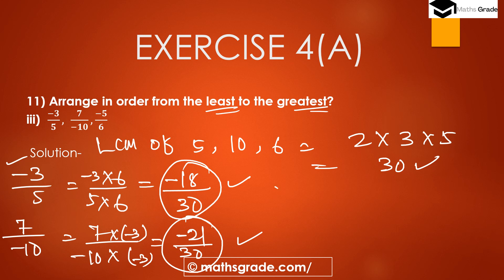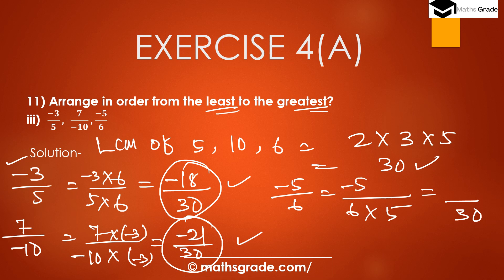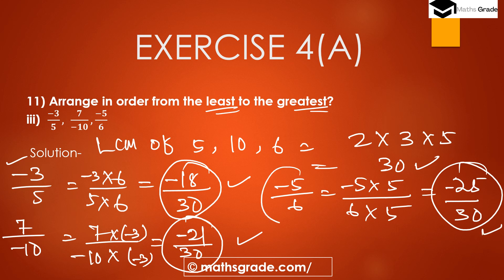Convert −5/6 into an equivalent rational number. Multiply denominator 6 by 5 to get 30. Multiply numerator −5 by 5: −5 × 5 = −25. So −25/30 is the equivalent rational number of −5/6. Now all three rational numbers have equal denominator 30.